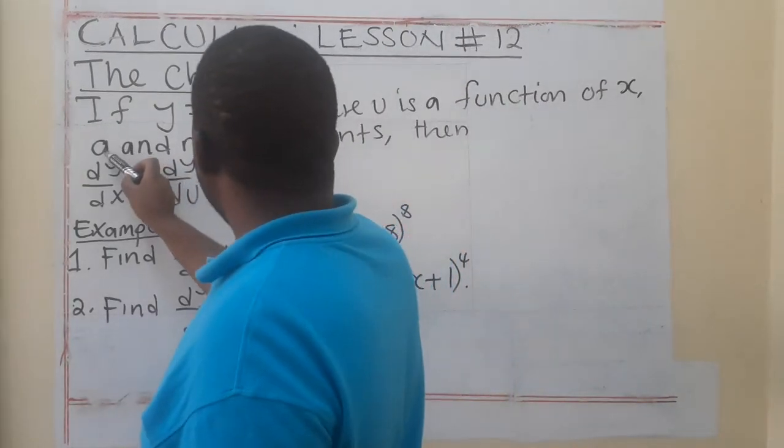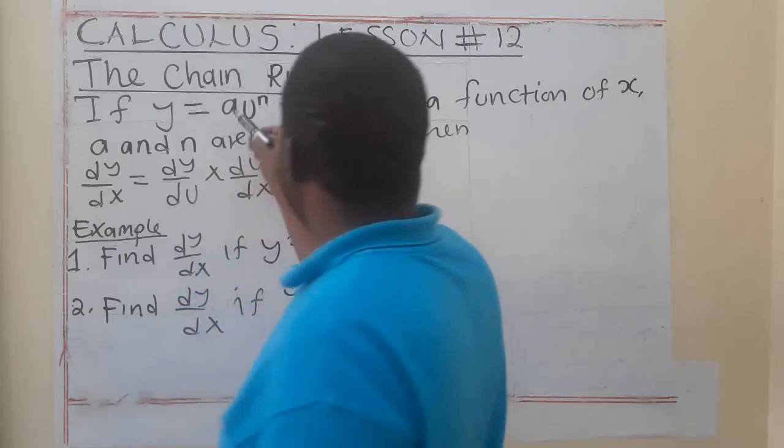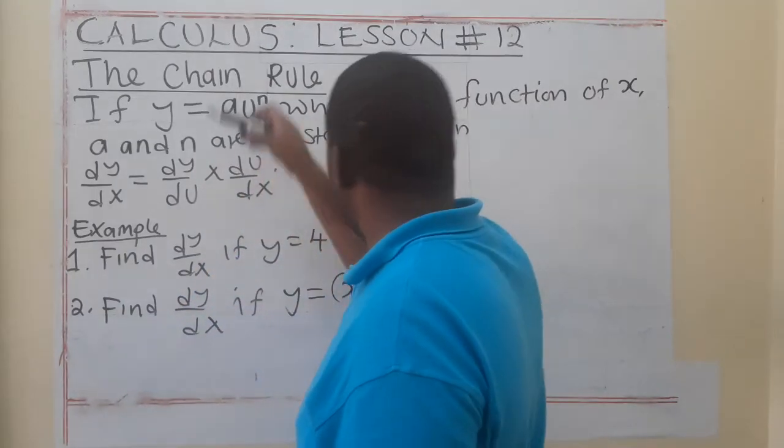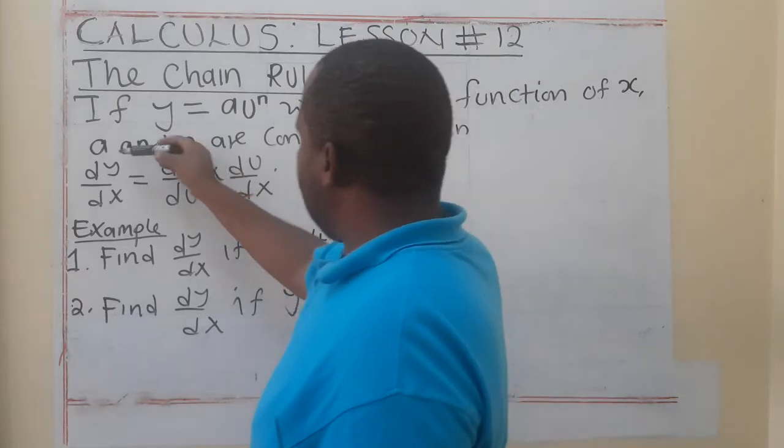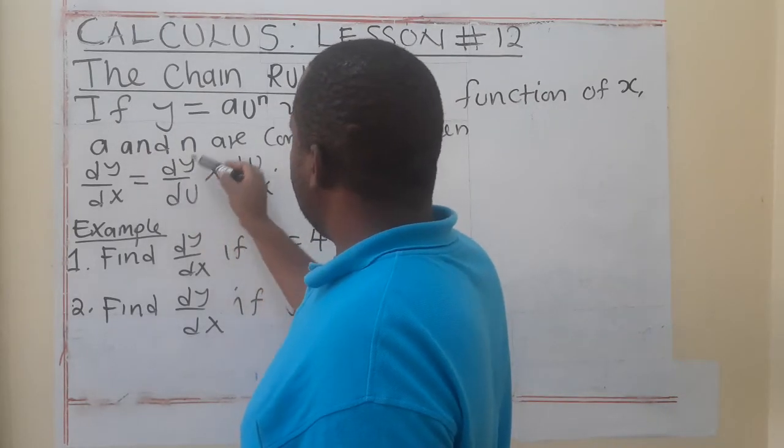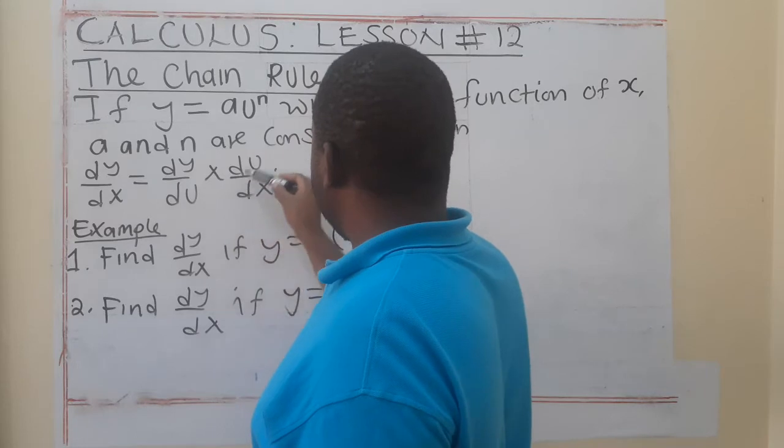And a here, together with n, are constants, so it means here we can have a coefficient of this function, there we can have a power. Then, what are we saying? dy/dx is equal to dy/du multiplied by du/dx.